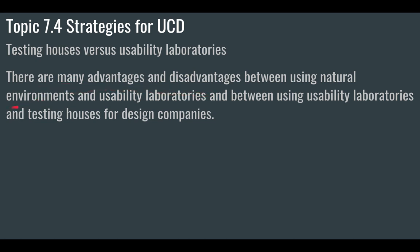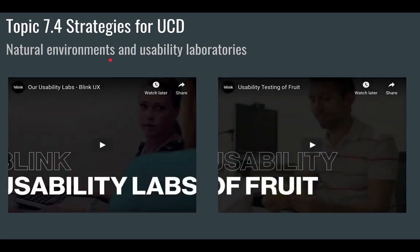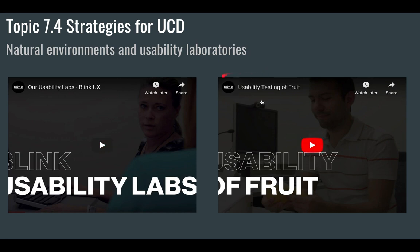There are advantages and disadvantages between using natural environments and usability labs. A usability laboratory is an artificial environment set up to allow people to interact with products while being monitored. You can watch a video to see what a usability lab looks like — it shows things like eyeball tracking. There's also an example of usability testing applied to fruit, which demonstrates the kinds of analysis possible in usability labs.